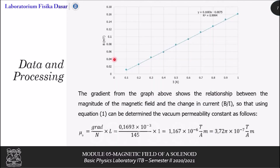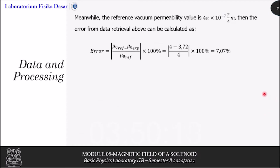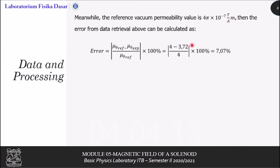This data is then regressed linearly with the y-axis as magnetic field and the x-axis as the current, so that we will have a linear regression equation, in which the gradient shows the relationship between the magnitude of the magnetic field and the change in current. By using equation 1 from the basic theory, we can determine the vacuum permeability constant. We then compare it to the reference value of 4π × 10⁻⁷ tesla meter per ampere, giving an experiment error of 7.07%.